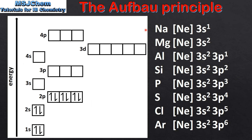Next we'll look at the elements sodium to argon. For these elements I'm using abbreviated electron configurations. These have square brackets and the symbol for a noble gas. This represents the electron configuration of the noble gas — in this case it's neon, which is 1s2, 2s2, 2p6. Starting with sodium, we put 1 electron in the 3s sublevel. And next we complete the sublevel with magnesium which is 3s2.